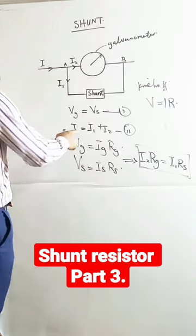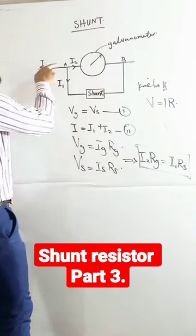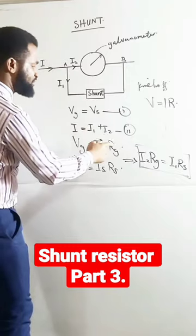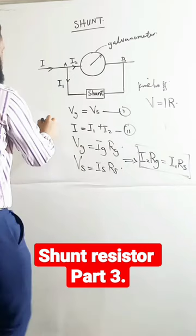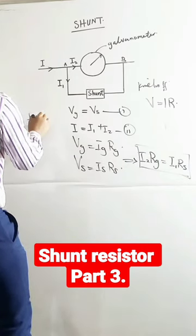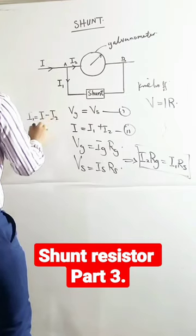Now, remember that from this principle, we say that the current coming in is equal to I1 plus I2. So we have to substitute. And I'm going to say that I1 is going to be I minus I2.